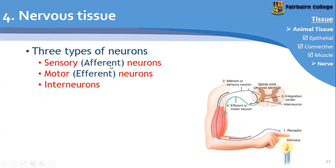Other names for these are afferent and efferent neurons. Afferent neurons are your sensory neurons; efferent neurons are your motor neurons. One way to remember this: motor neurons bring about an effect — with an E. Motor neuron brings about an effect. Then interneurons are in between the two — here in your spinal cord you have an interneuron that connects the two.